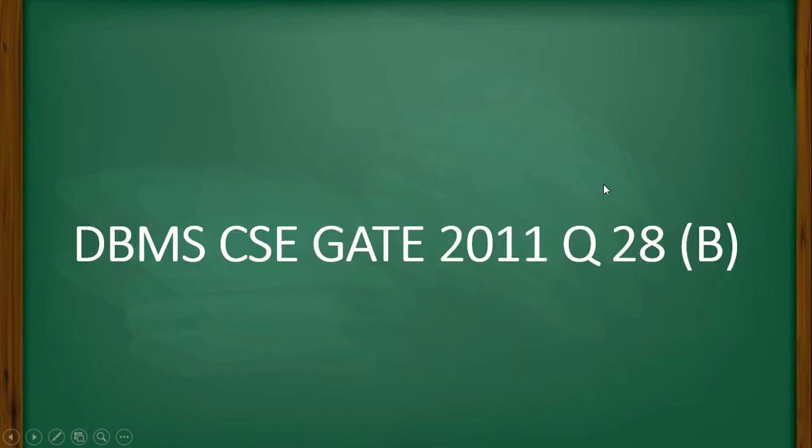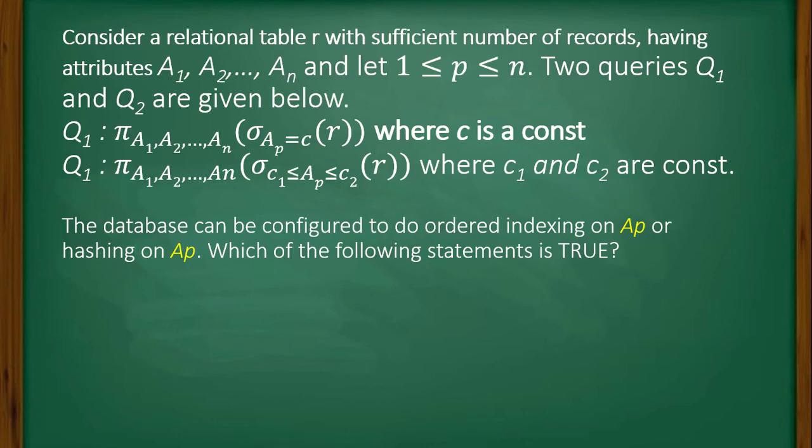Here is a question from DBMS GATE 2011, question number 28. Consider a relational table R with sufficient number of records having attributes A1, A2, up to An.